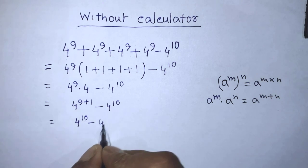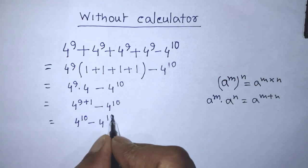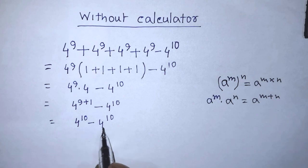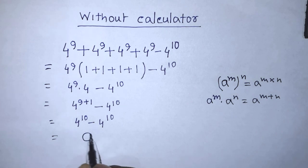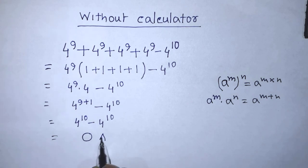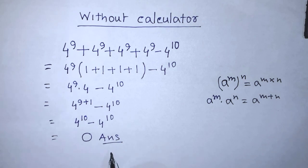We have 4 to the power 10 minus 4 to the power 10. If you subtract 4 to the power 10 from 4 to the power 10, you get 0. So our answer is 0. If you like this video and this trick, please support me and subscribe to my channel. Thank you!